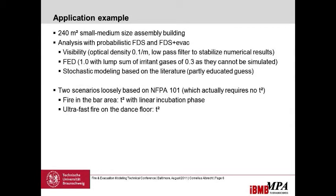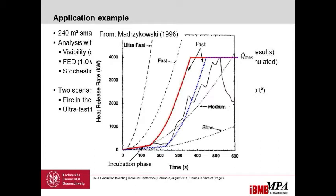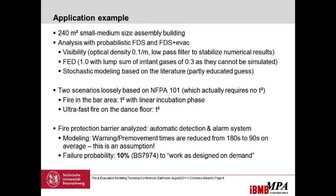Two scenarios were considered loosely based on NFPA 101: one is a fire in the bar area using a T-square fire with a linear incubation phase, and the other is an ultra-fast T-square fire. Fire experiments show there's always a little incubation phase, so I included that because using a pure T-square scenario for life safety is very conservative. The fire protection barrier analyzed was an automatic detection and alarm system, modeled by reducing the warning and pre-movement time from 180 seconds to 90 seconds.